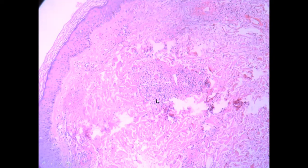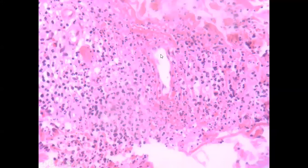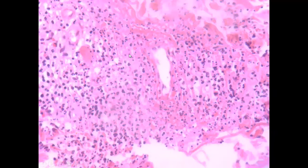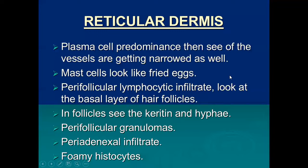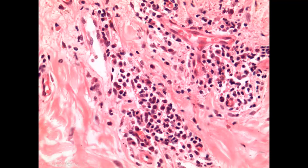Here you see dense neutrophilic infiltrate surrounding blood vessels. On higher power the vessel wall is ill-defined and eosinophilic — this is fibrinoid necrosis — and neutrophils are seen with leukocytoclasia, appearing as individual lobules or dots surrounding blood vessels, indicating the neutrophils are undergoing karyorrhexis. There is also some necrosis and calcification around the vessels with a few eosinophils. When the predominant cells are plasma cells and blood vessels show obstruction, this is a typical appearance of secondary syphilis.